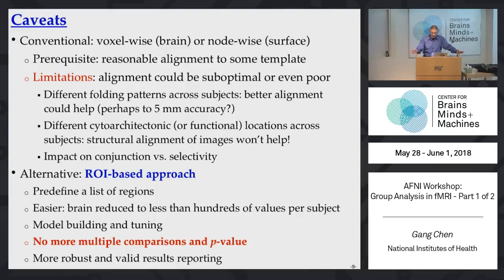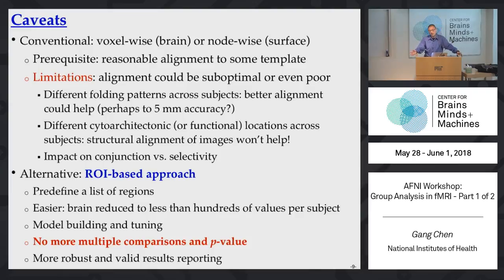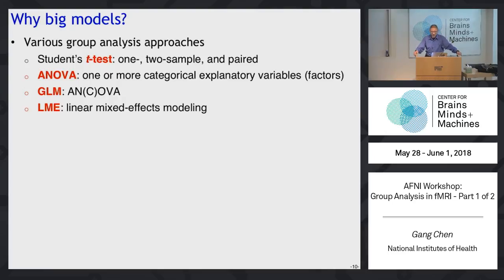There are many other caveats. Every subject's brain is unique — the shape is different, region location slightly differs, and region size differs. When we do group analysis, we warp individual subject brains to a standard space. That alignment is not perfect and may have some impact on statistical significance. This is also a reason motivating us to develop the ROI-based approach, which we'll discuss tomorrow morning, as an alternative that may achieve better detection power.